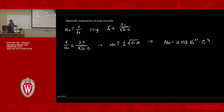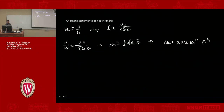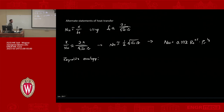We can also use the Reynolds analogy for the friction factor, which relates boundary layer growth for heat transfer with boundary layer growth for momentum. Starting from Nu ≈ x/delta-t so delta-t = x/Nu, and also noting Cf = 2mu/(rho × u-infinity × delta-m), which gives delta-m = 2mu/(rho × u-infinity × Cf).